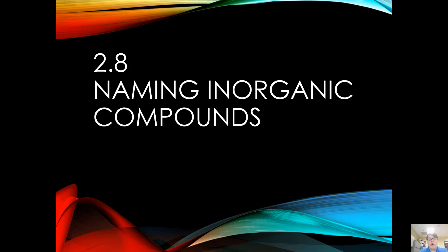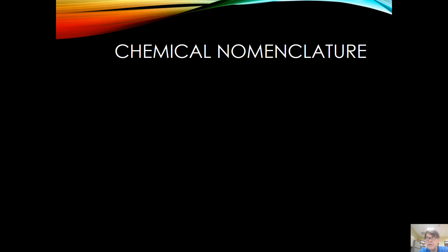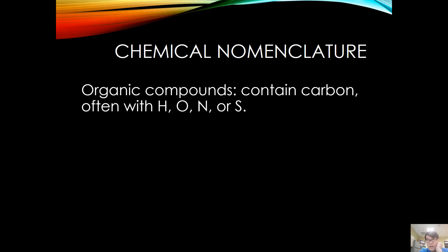This is a video on naming inorganic compounds, following Brown, Burstyn, LeMay, and Murphy's chemistry textbook called Chemistry the Central Science. There are two basic kinds of compounds, where a compound is more than one atom connected. The word nomenclature is basically a highfalutin word for naming — the names that we call things.